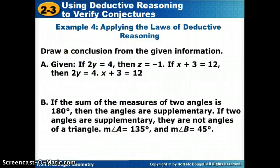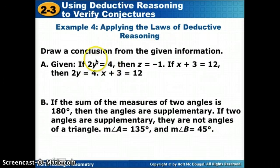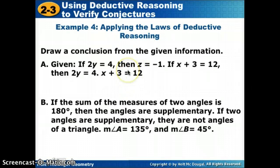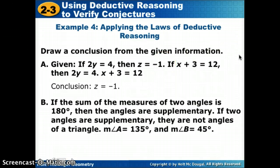Now, given some information, let's see if we can draw a conclusion. If 2Y equals 4, then Z equals negative 1. If X plus 3 equals 12, then 2Y equals negative 4. We see a matching hypothesis and conclusion, so we'll use law of syllogism. If X plus 3 equals 12, then Z equals negative 1. Our conclusion using law of syllogism is that Z equals negative 1.